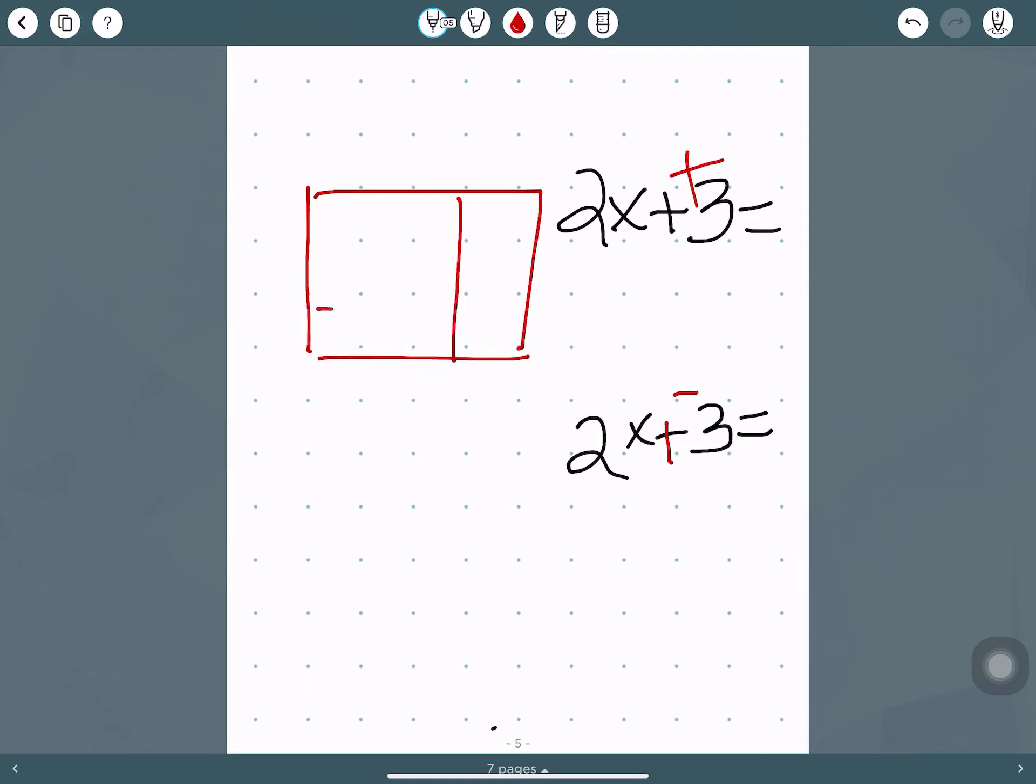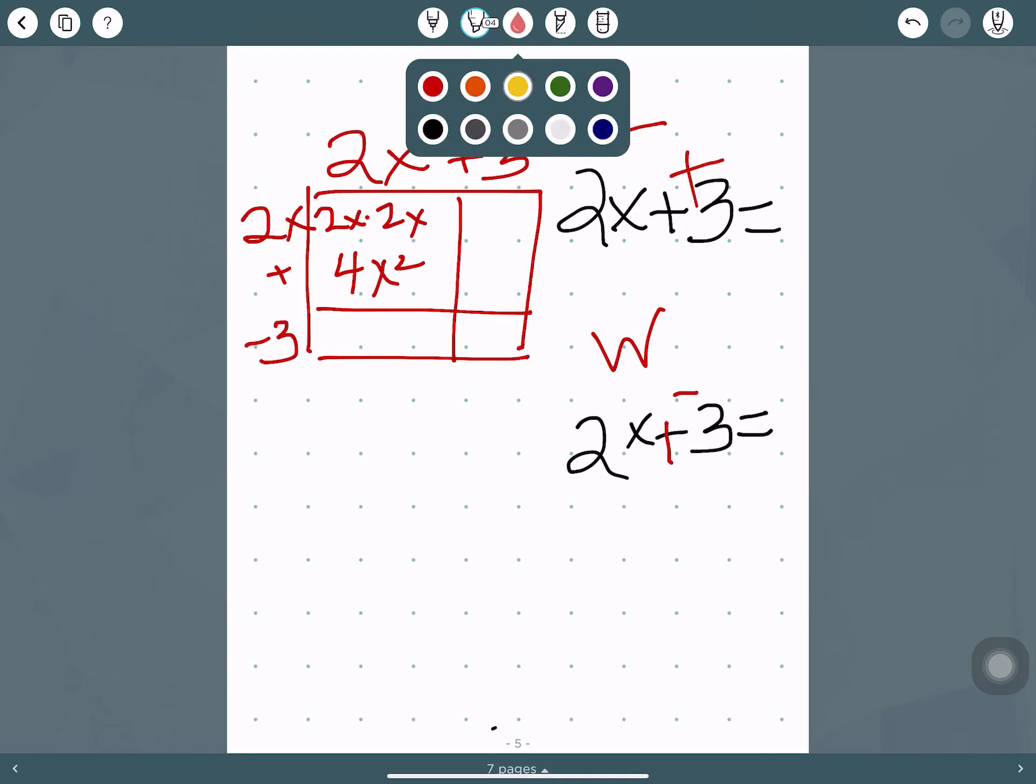Hopefully that should be coming back to you. So to set up our rectangle, let's say that's our length and that's the width. We're going to do 2x plus 3, and then we're going to do 2x plus negative 3. And then we would find the area of each rectangle. So 2x times 2x gives us 4x squared.